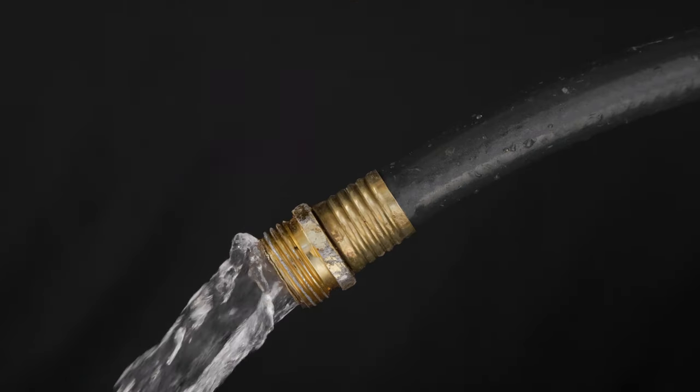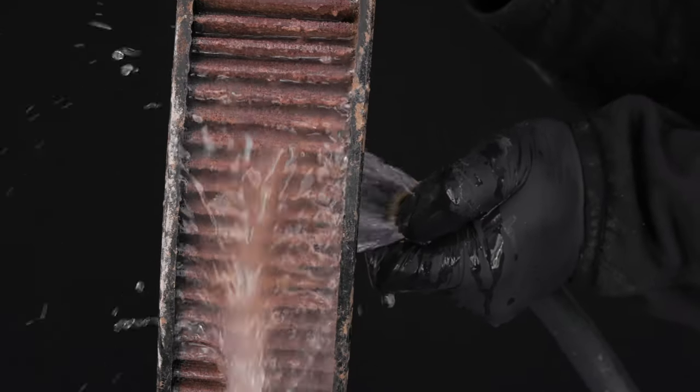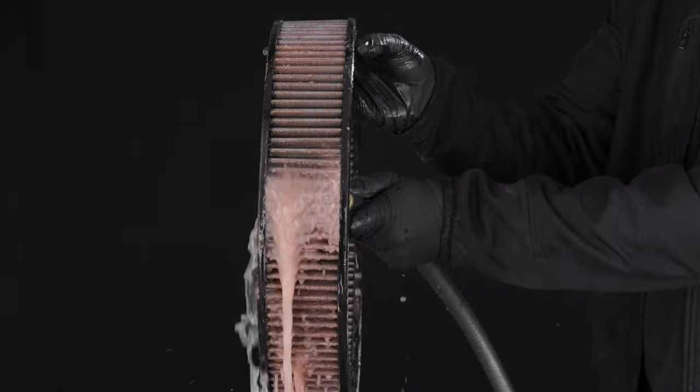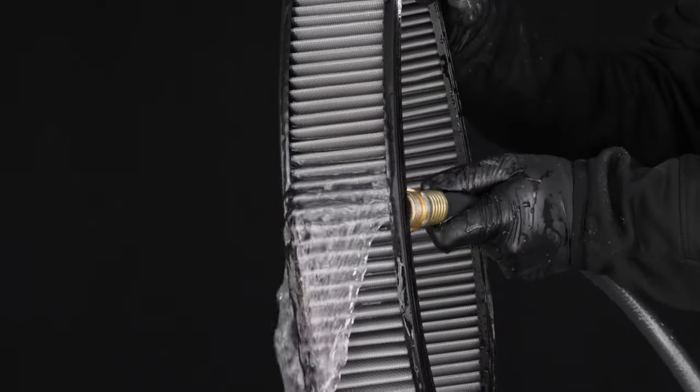Using a low-pressure water source, flush water through the clean side of the filter, forcing water to run out of the dirty side. Continue rinsing until the water flowing out of the filter is clear and the filter is free of debris.